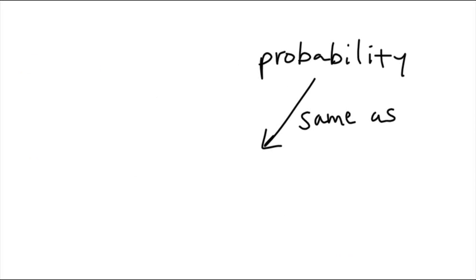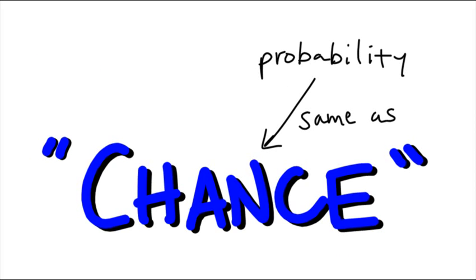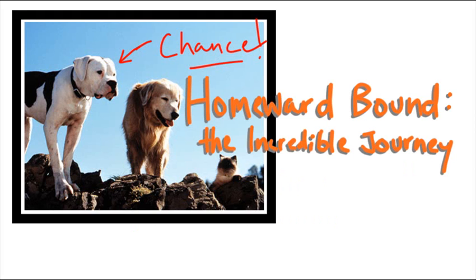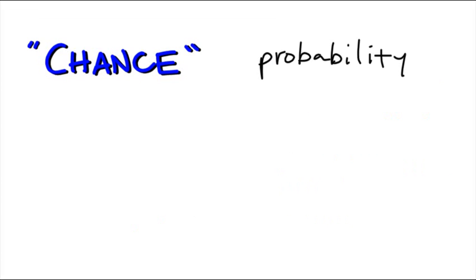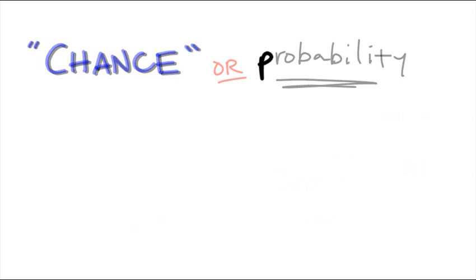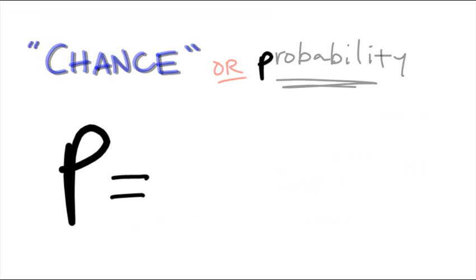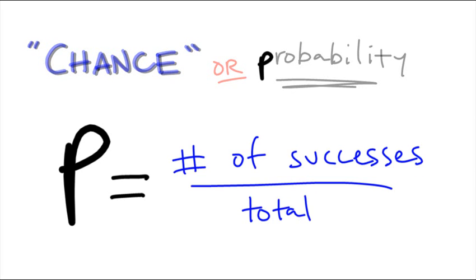First we'll talk about probability. All probability is basically the same as chance — and we're talking about chance when it comes to math. You can call it chance or probability. We take the P from probability, and that's how we usually abbreviate it. So you have P equals number of successes out of the total. That's how you find probability.